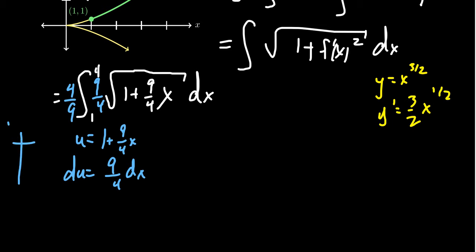And also changing the bounds. So as we switch from x to u, we have to worry about the numbers 4 and 1. Plugging those in there, if you plug 4 in there, 9 fourths times 4 is just 9 plus 1 is a 10. That's not so bad. If you plug in a 1, you're going to get 1 plus 9 fourths, which is the same thing as 4 fourths plus 9 fourths. So you're going to get 13 fourths as we change the bounds.